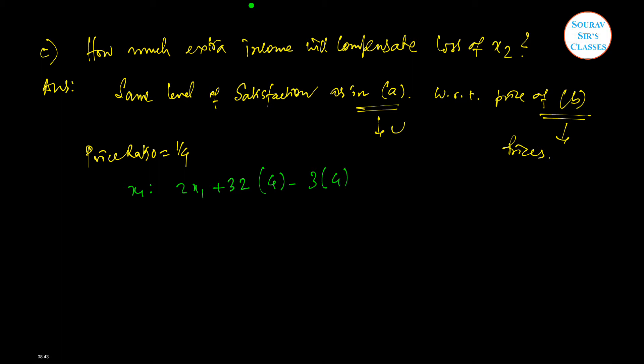Here what you have to do is the price ratio is 1 by 4, and to find x1 we will solve the following structure: 2x1 plus 32 times 4 minus 3 times 4 square. x1 is given in the last part as 15, so 2 times 15 plus this part is equal to 32 times 5 minus 3 times 5 square, in order to maintain the same level of satisfaction.